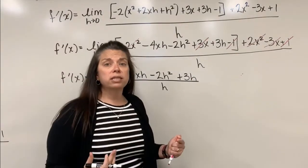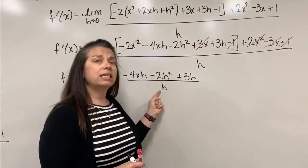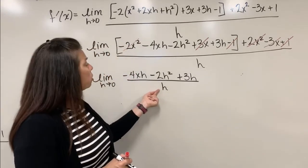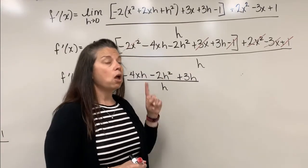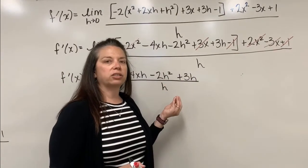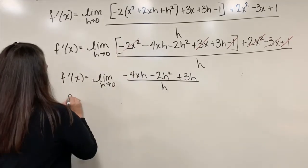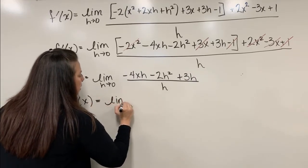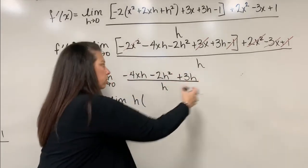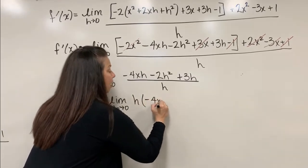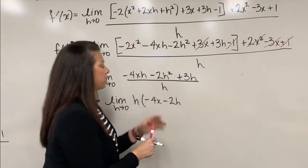The goal is to do this algebra so we don't have division by h. Looking closely, every term in the numerator has at least one factor of h, so we can treat h as a greatest common factor and pull it out. So f prime of x equals the limit as h approaches 0 of h times the quantity negative 4x minus 2h plus 3, all divided by h.